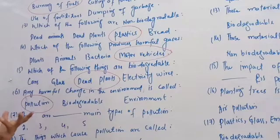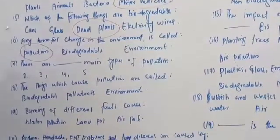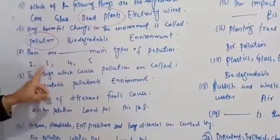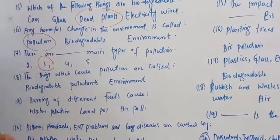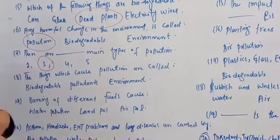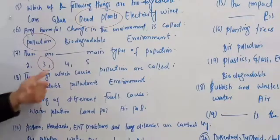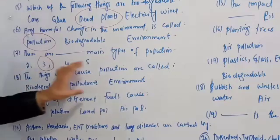There are main types of pollution. These are three types: water pollution, land pollution, and air pollution.